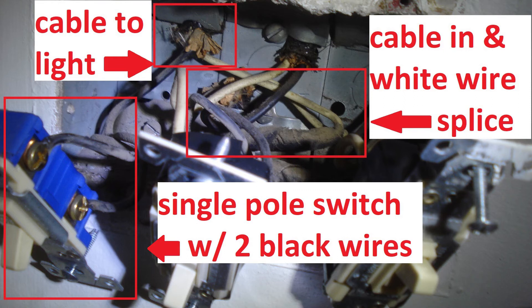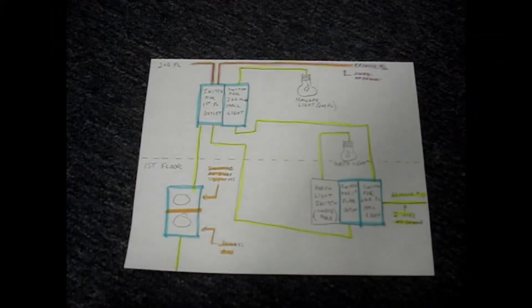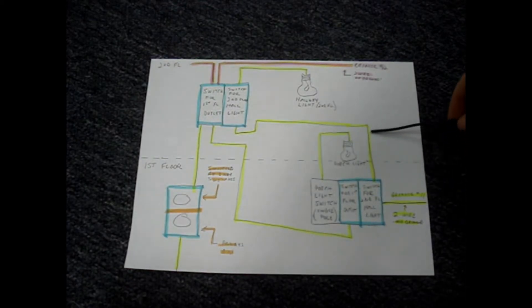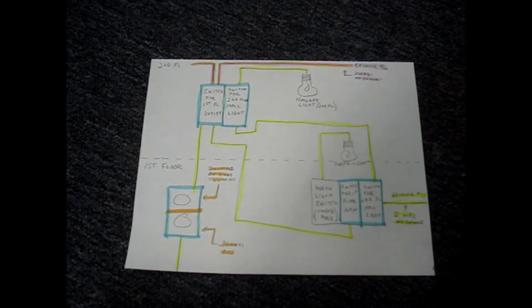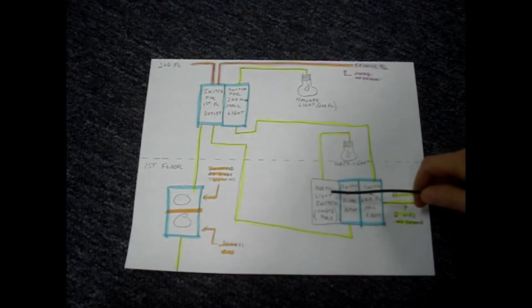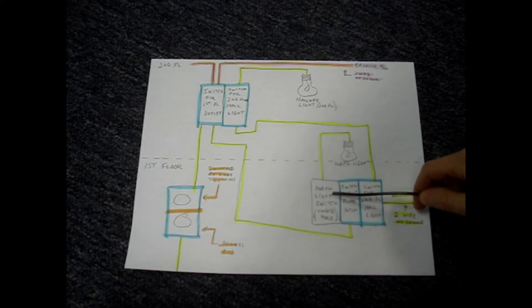Here's an example of what you would see in the field. In this diagram, breaker number 11's cables are highlighted in yellow. The first floor switch box is fed by a cable that comes from an outlet. In that box is a single pole switch, which I just showed to you.